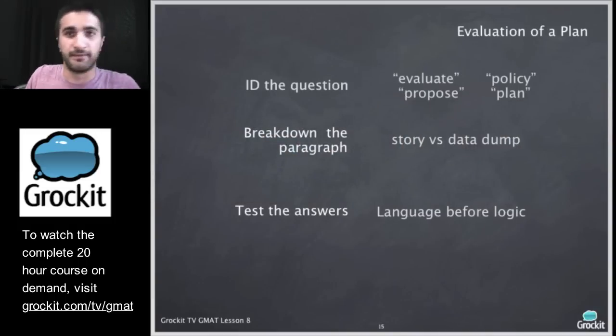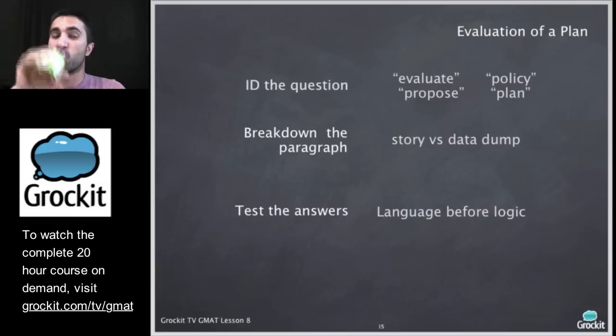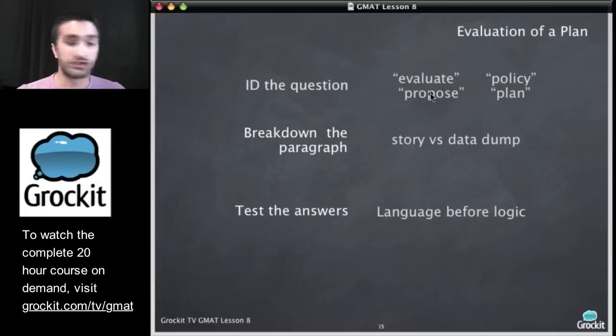So, the next question type that we're going to work today are evaluation of a plan questions. And, as you can imagine, this makes sense for the GMAT to ask us these types of questions. We're going into business school. We're going to become masters of business administration. And, part of our jobs at any business will be to evaluate potential plans and to propose potential plans. So, it makes sense that folks want to assess our understanding of understanding plans and our ability to evaluate them and our ability to propose a next step or a plan to take on a certain situation. Great. How do we ID evaluation of a plan questions? They usually contain these words: evaluate, propose, policy, or plan.